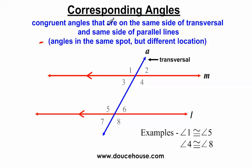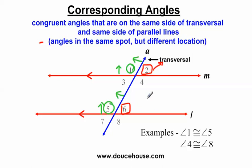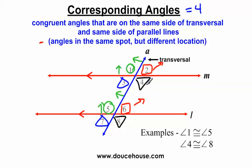Corresponding angles are angles in the same spot but different location. If I'm looking at angle one - everything on the left side of the transversal, on the same side of the parallel line - angle one is above the parallel line and angle five is above the parallel line, so angle one and angle five are an example of corresponding angles. Another set would be two and six - both in the top right corner. Unlike alternate interior and alternate exterior angles, corresponding angles generally come in pairs of four. Angle three and angle seven are another example - both in the bottom left corner. And angle four and angle eight are also corresponding angles, both in the bottom right corner.